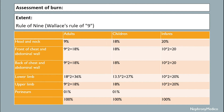The lower limb is 36% in adults, 27% in children, and 20% in infants. The upper limb is 18% in adults, 18% in children, and 20% in infants. The perineum accounts for 1% in adults and 1% in children.